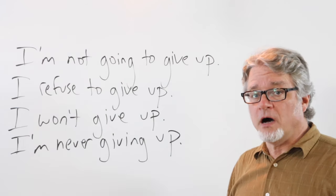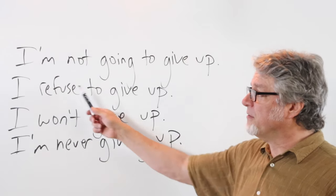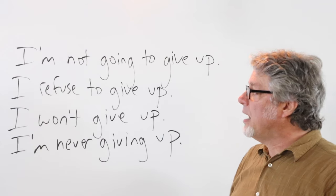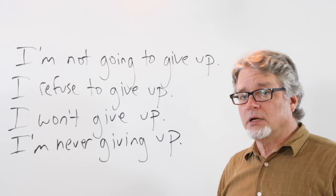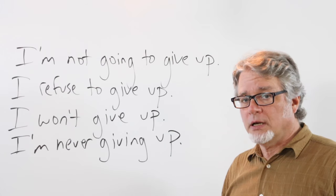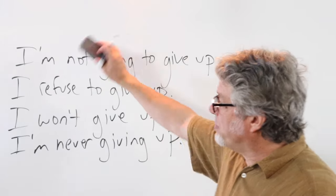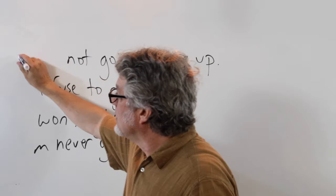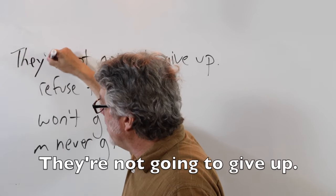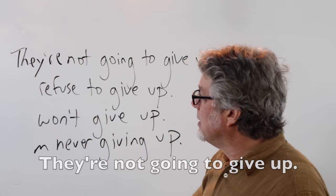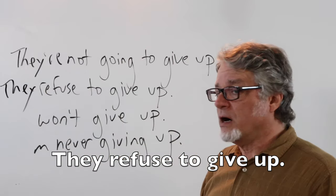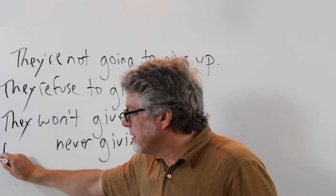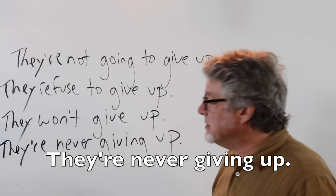People don't like to give up. When a person is talking about himself or herself using the pronoun I: I'm not going to give up, I refuse to give up, I won't give up, I'm never giving up. You can replace this pronoun of course with any other pronoun if you want to make this plural. They're not going to give up, they refuse to give up, they won't give up, and they're never giving up.